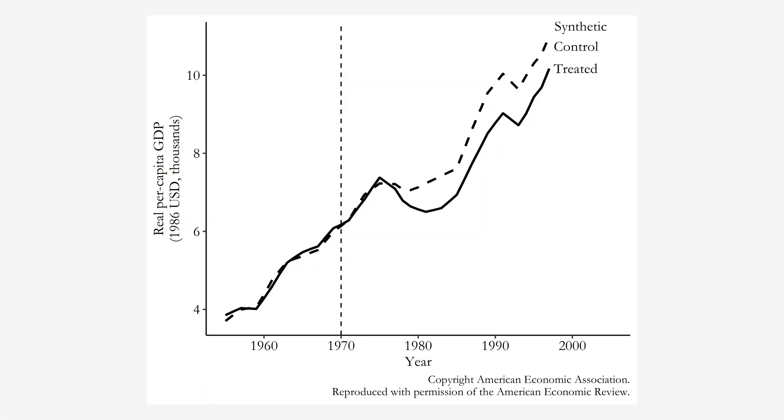You might think some regions of Spain might be more or less comparable to the Basque region — and they agree. That's what the synthetic control method does: it takes all those other different regions of Spain and says, based on their characteristics and also based on what their pre-treatment outcomes look like, I'm going to construct a set of weights so that when you average together all those other regions, you get a line that looks just like the Basque region's line. That's what we see in the pre-treatment period — look how closely those lines go together. That's something difference-in-differences could only dream of.